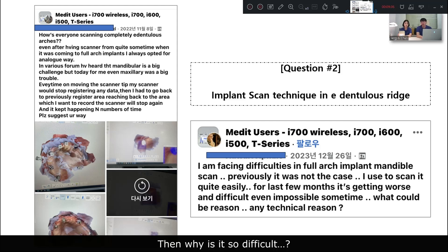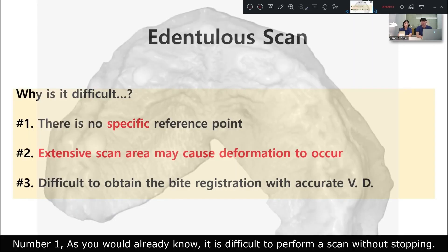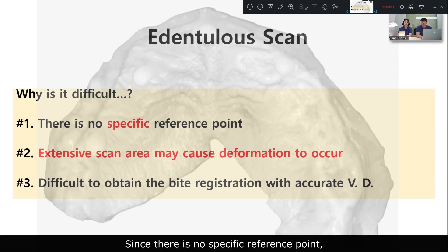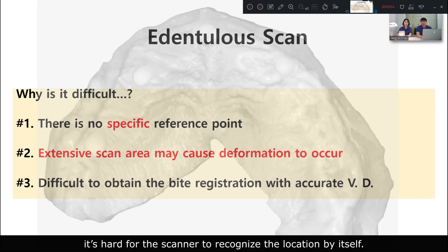Then why is it so difficult? First, as you would already know, it is difficult to perform a scan without stopping in an edentulous case. Since there is no specific reference point, it's hard for the scanner to recognize the location by itself. So we need to add some reference points.